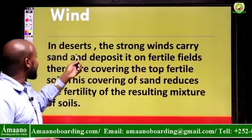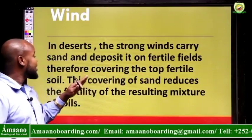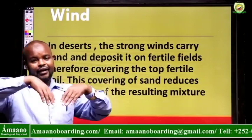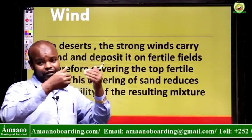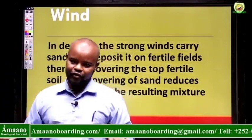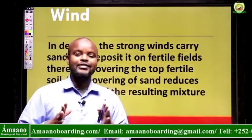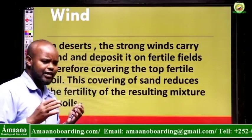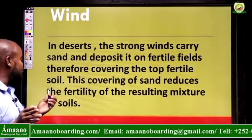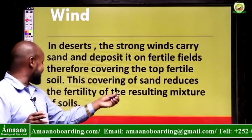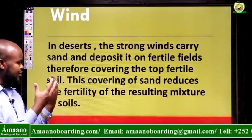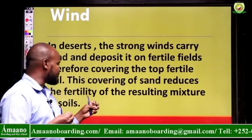In deserts, for example, strong winds carry sand and deposit it on fertile fields, covering the top fertile soil. If a desert is nearby, the wind blowing over it takes sand from the desert and spreads it over the fields. This builds up into sand dunes — heaps and layers of sand. This covering of sand reduces the fertility of the soil, resulting in a mixture of sand, loamy soil, and clay, which reduces the capacity of the soil to be productive and fertile.